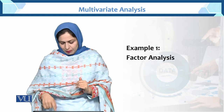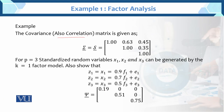This is example number one of factor analysis. The covariance matrix, or correlation matrix, is given for p equals to 3, meaning we have 3 variables: standardized random variables x1, x2, x3.